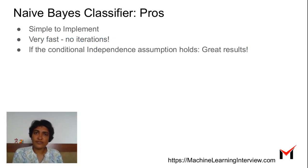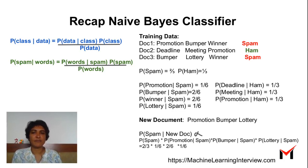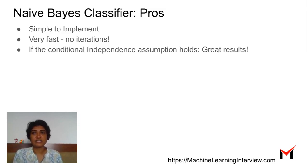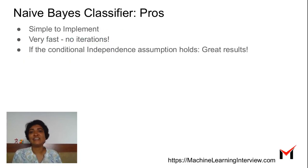What are the advantages of using the Naive Bayes classifier? First, it is simple to implement — we just use these simple formulas to compute probabilities and determine which class a new document belongs to. Second, it is very fast since there are no iterations at all. You just compute these probabilities as simple ratios, which is the maximum likelihood estimate, so you don't need an iterative solution. Wherever time is an important factor, Naive Bayes is a great choice.